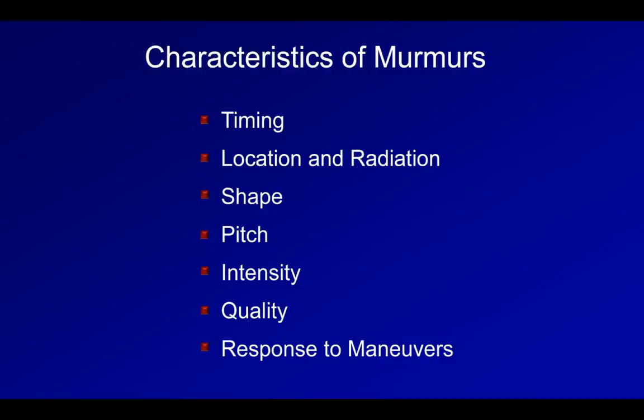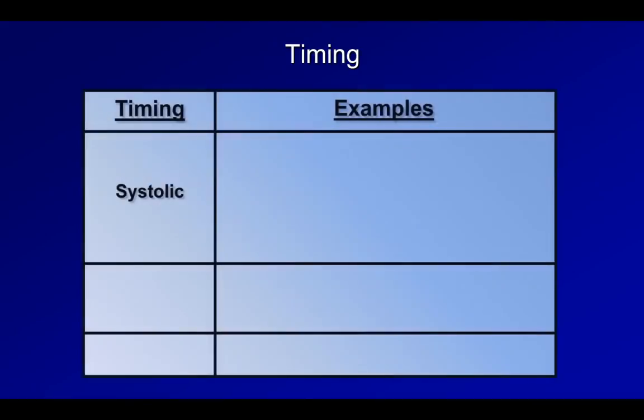So let's go through what each of these characteristics mean, one at a time. When one talks about the timing of a murmur, it is the timing relative to the cardiac cycle — specifically, is the murmur present in systole, diastole, or both? It is the single most important characteristic that will aid in the diagnosis of an associated abnormality. Systolic murmurs are by far the most common, comprising greater than 95% of all murmurs you'll hear among hospitalized patients.